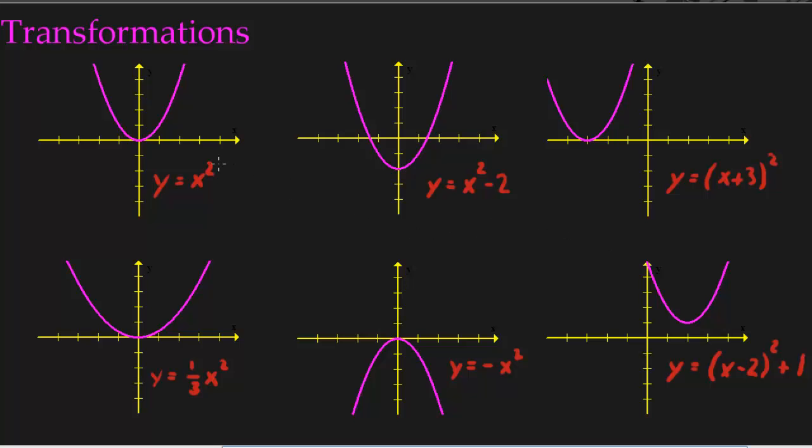Do you see it? They all have an x squared, or basically something squared. Right? x squared, x squared minus 2, x plus 3 squared, 1 third x squared, negative x squared, and again, you have something squared.